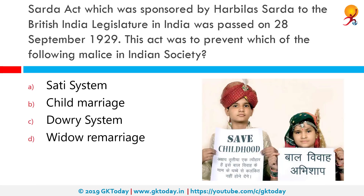The Sharda Act, sponsored by Harvilas Sharda to the British India Legislature, was passed on 28th September 1929. This act was to prevent which of the following malices in Indian society? The correct answer is Child Marriage. It is also known as the Child Marriage Restraint Act 1929, passed in the Imperial Legislative Council of India, and fixed the age of marriage for girls at 16 and boys at 18 years, which was later amended to 18 for girls and 21 for boys. It is popularly known as the Sharda Act after its sponsor Harvilas Sharda.